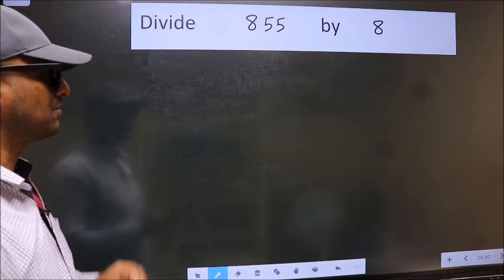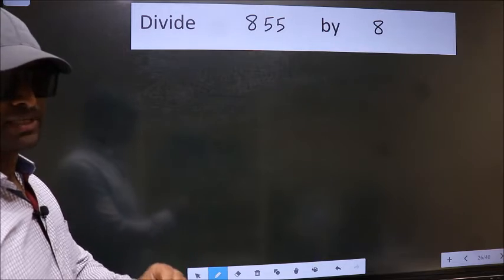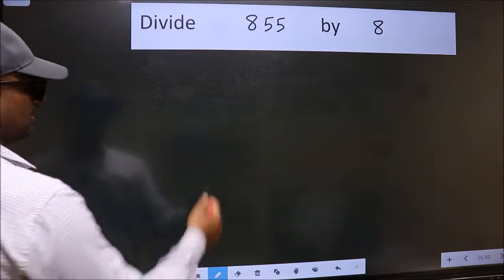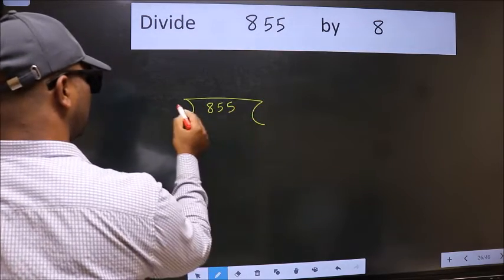Divide 855 by 8. To do this division, we should frame it in this way: 855 here and 8 here.